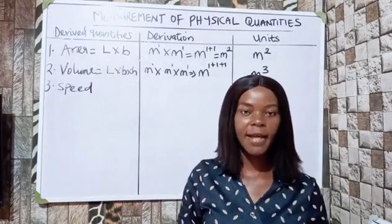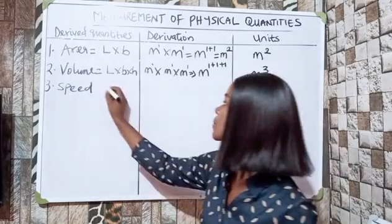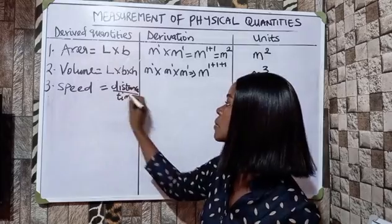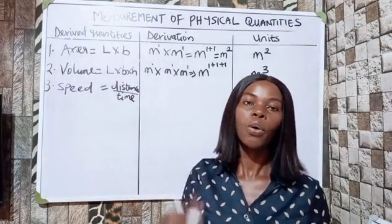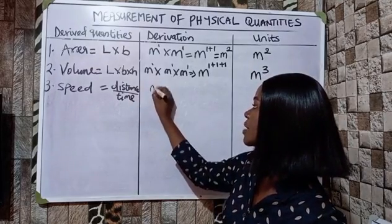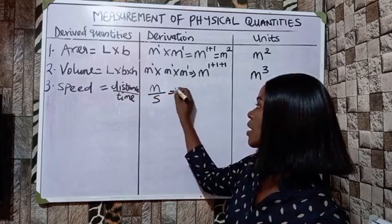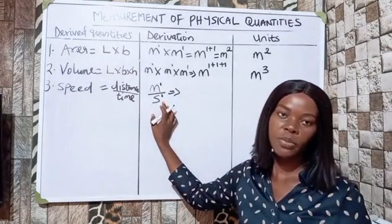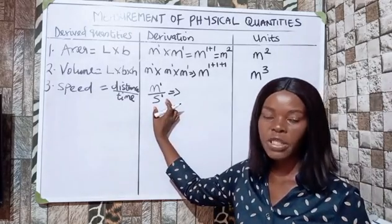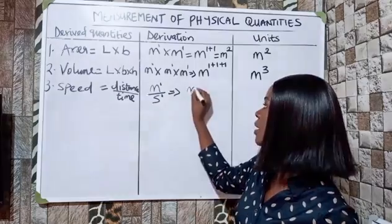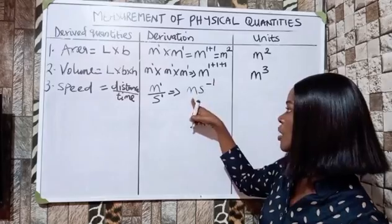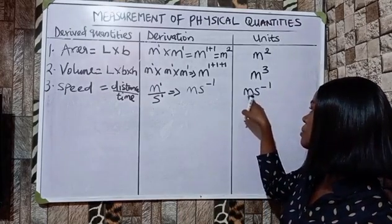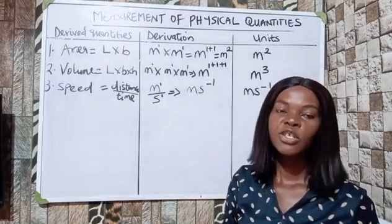Speed is defined as distance divided by time. Distance is measured in meters and time in seconds. Using the law of indices, the seconds in the denominator comes up carrying a power of negative one, giving us m·s⁻¹. So the unit of speed is meters per second.